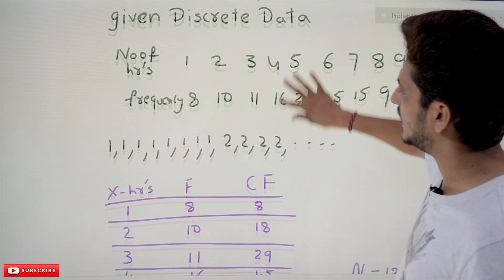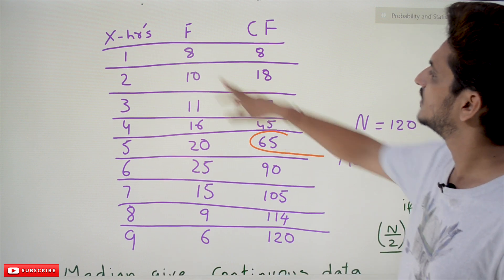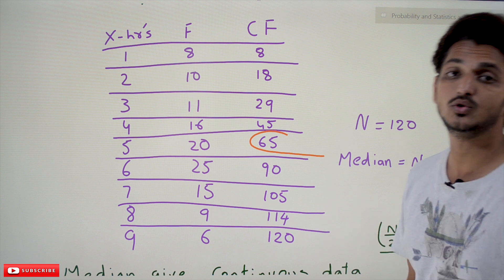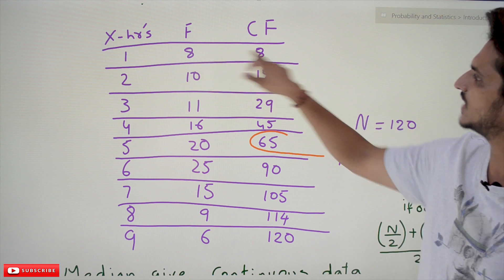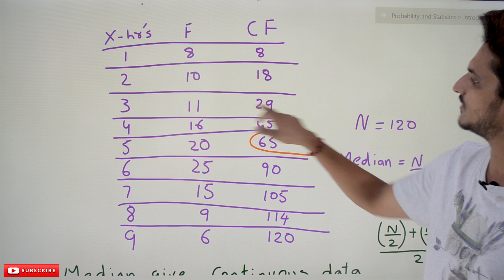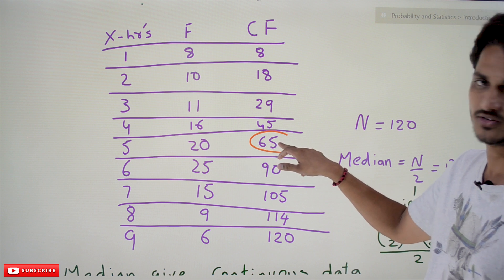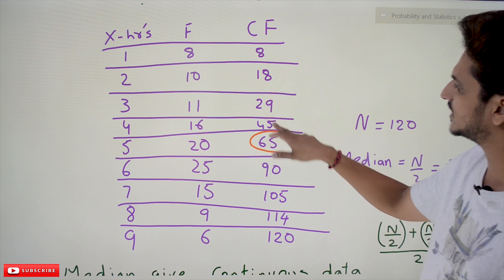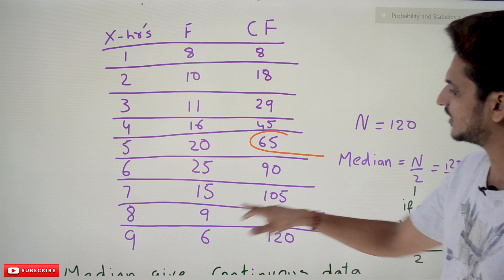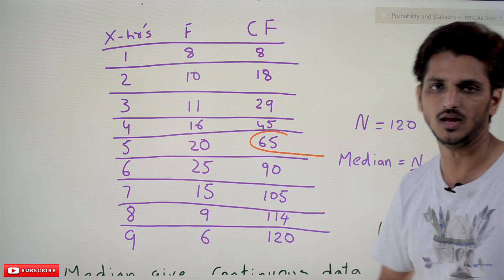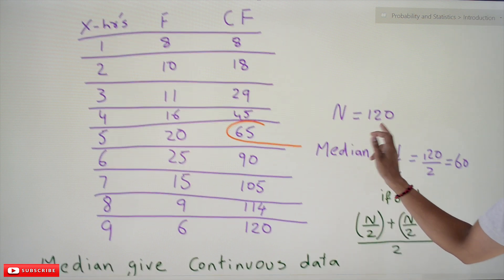Here X is number of hours and frequency values are 8, 10, 11, 16, 20, 25, 15, 9, 6. We calculate the cumulative frequency: 8, 18, 29, 45, 65, 90, 105, 114, 120. Total number of students is 120, so n = 120.